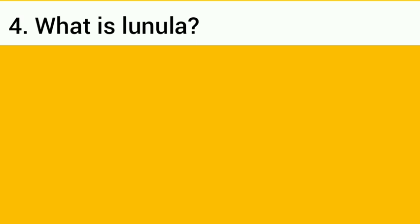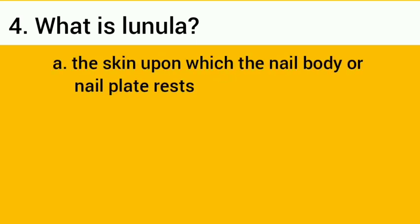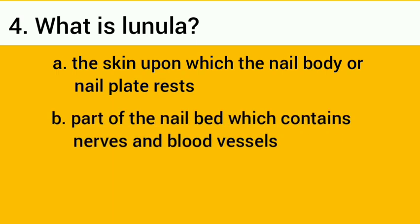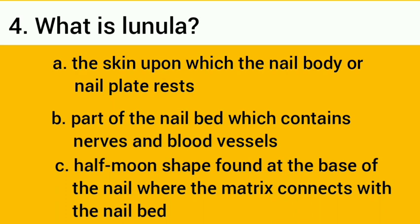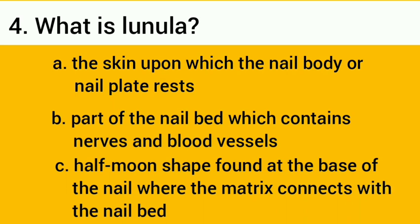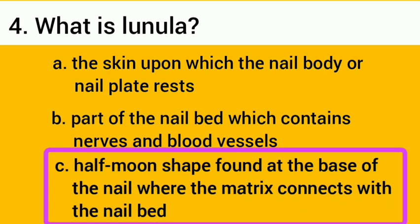Number four: what is lunula? A, the skin upon which the nail body or nail plate rests; B, the part of the nail bed which contains nerves and blood vessels; C, half-moon shape found at the base of the nail where the matrix connects with the nail bed. The correct answer is letter C: half-moon shape found at the base of the nail where the matrix connects with the nail bed.